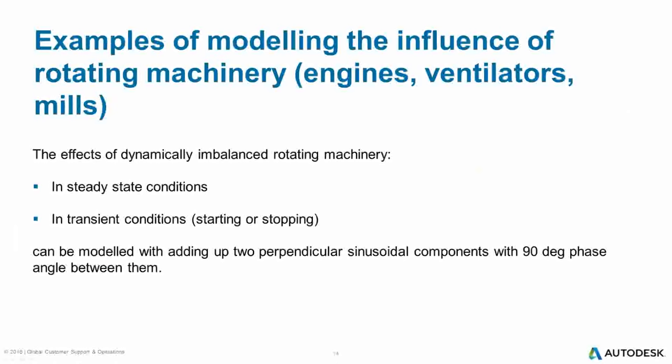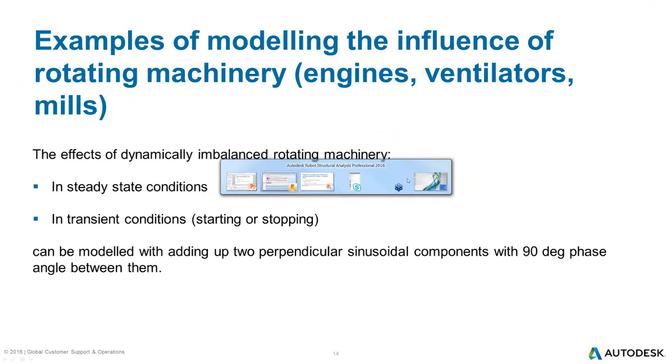Let's see another example of using time history analysis. Now we will try to model a rotating piece of machinery as two perpendicular forces with a 90-degree phase angle between them, using two models. The first model represents the steady-state condition — steady rotation — whereas the other is intended for the transient condition, that is, starting or stopping rotations.